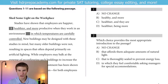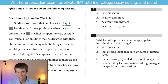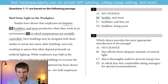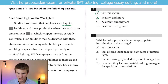Questions 1 through 11 are based on the following passage: 'Shed some light on the workplace.' Studies have shown that employees are happier, healthier, and more productive when they work in an environment. For question 1, I'm looking for parallelism. I have 'happier,' 'healthier' — that's perfect. I can get rid of B because it has 'healthy' there. I want to maintain that parallel structure. 'And more productive' works perfectly — we can't say 'productiver.' So our answer there will be no change.